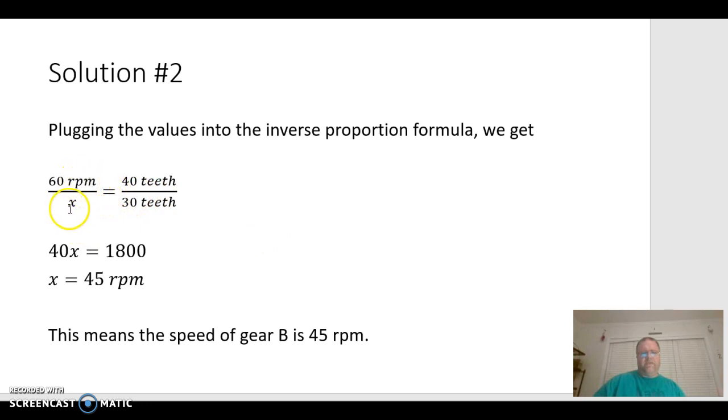We put it in here, 60 RPMs over, we'll put an X for our unknown quantity. That's the speed of gear B is equal to, and remember, we flipped that fraction. So, the teeth on gear B is 40 teeth, and the teeth on gear A is 30 teeth. Cross multiply, that's 40X is equal to 1800. Divide both sides by 40, and we're going to get 45 RPMs. And that's exactly where we thought we should be. It should be a little bit less than 60, somewhere between 40 and 50. And that lets us know that we're in the right area. So, this means that the speed of gear B is 45 RPMs.